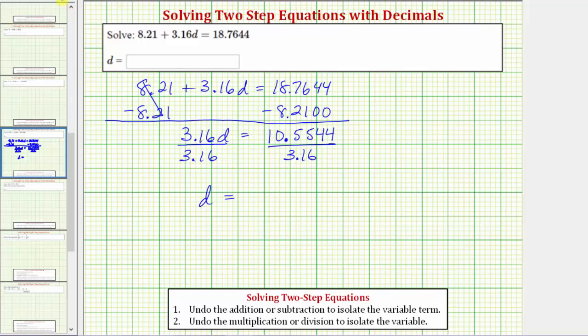Let's find this quotient on the side. So we have 10.5544 divided by 3.16. The first step is to make the divisor a whole number. To make 3.16 a whole number, we multiply by 100, which is the same as moving the decimal point to the right two places.